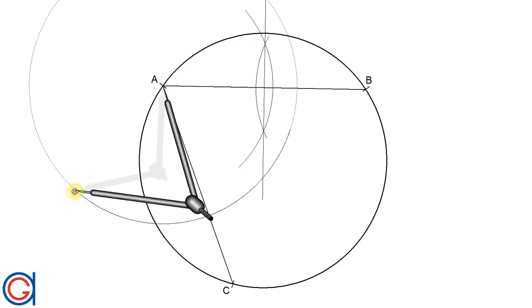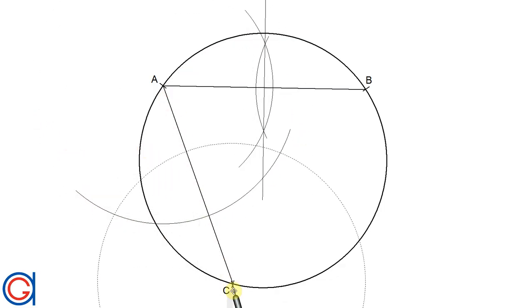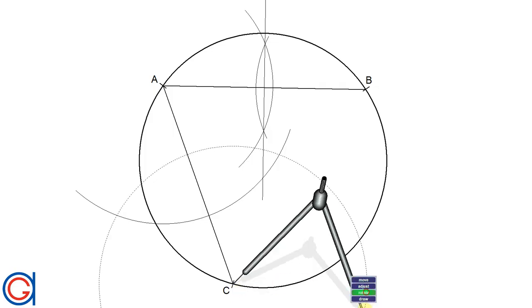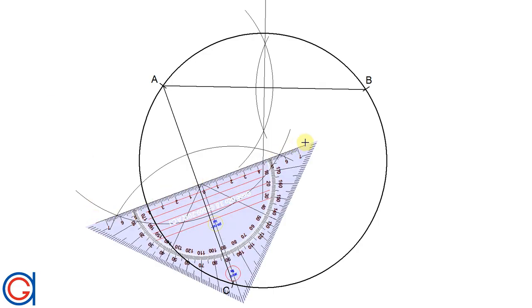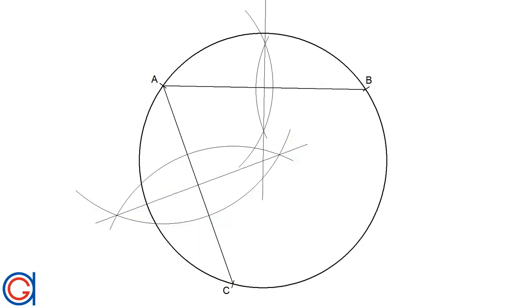And now we are going to repeat this process with the chord AC. So setting our compass slightly longer than half the length AC, we describe an arc above and below the line. And with the same radius and the compass set on C, we describe another arc intersecting. And we draw the perpendicular bisector as can be seen here.